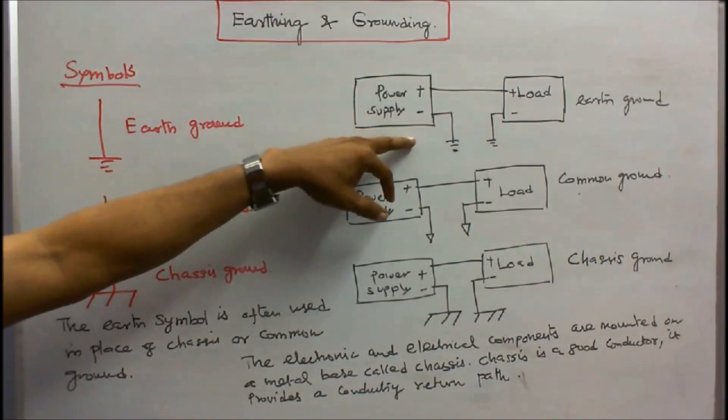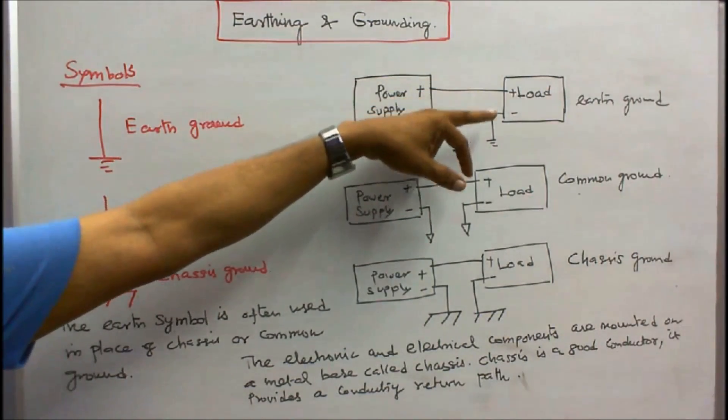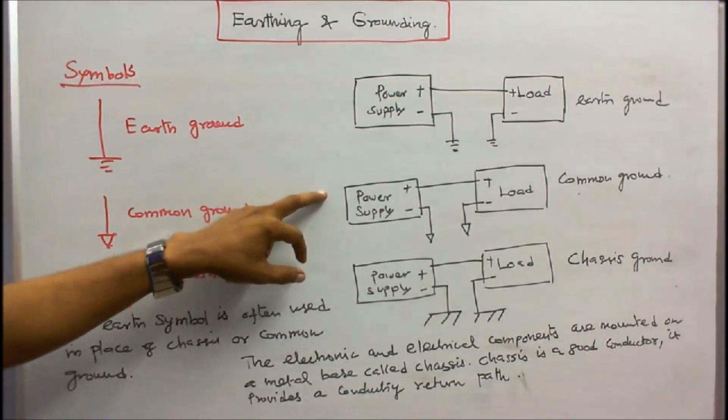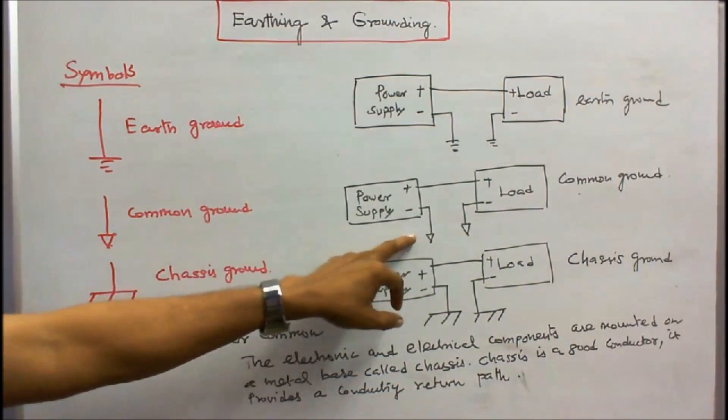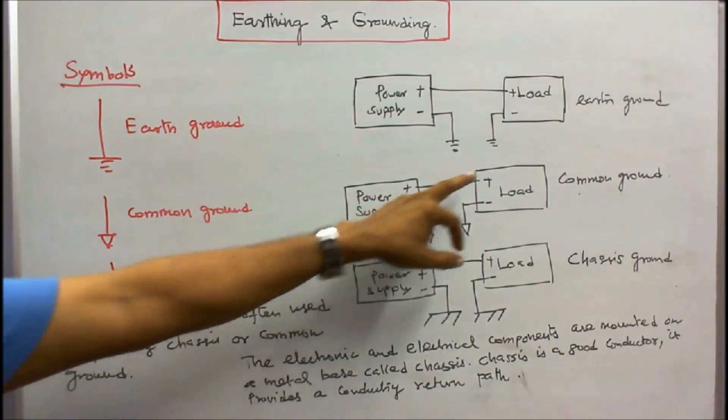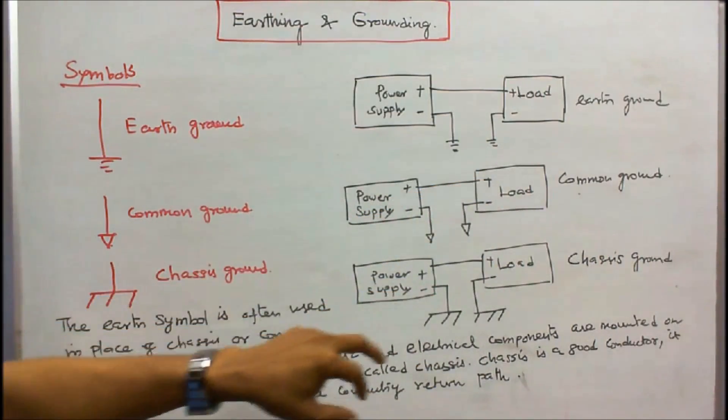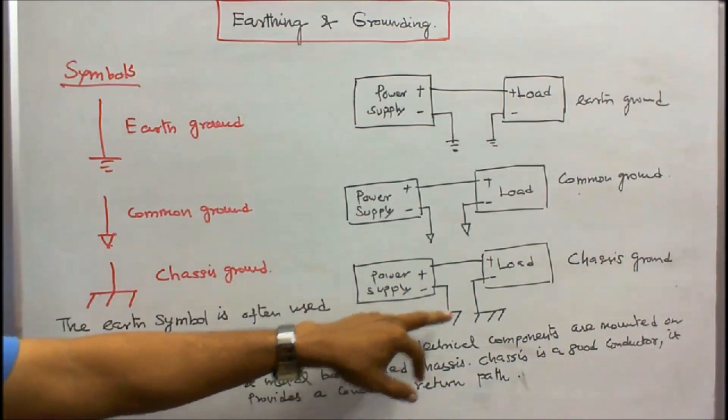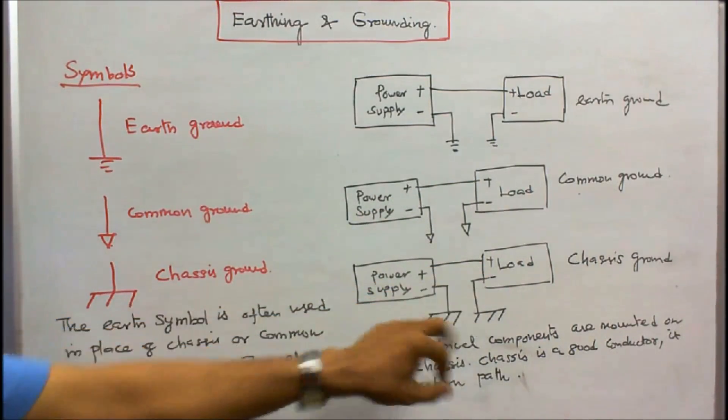Here this is a power supply. Positive, negative. Negative is earth. The load side. This is positive, negative. Negative is earth. This is earth ground. This is common ground. This is a symbol, I use this symbol. This is positive, this is negative. This is positive, negative. At load side. And similarly this is chassis ground. This is a symbol. Here the negative is earth and similarly this negative is earth.